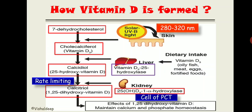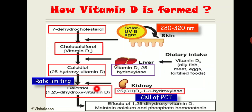The cell of the proximal convoluted tubule has 1-alpha hydroxylase, converting calcidiol into calcitriol — the active form. The kidney also has 24-hydroxylase. When the body has enough active vitamin D, it suppresses 1-alpha hydroxylase production, increases 24-hydroxylase, and instead forms 24,25-dihydroxyvitamin D, which is the inactive form.